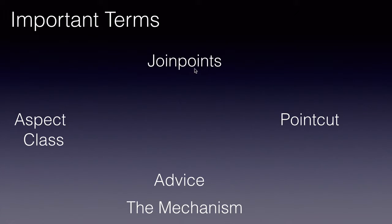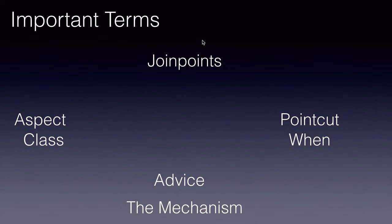A point cut provides an expression language. It's like a regular expression language to match a particular join point — that is, a field, a method, or a constructor. It gives us a syntax to express join points.